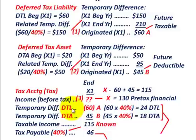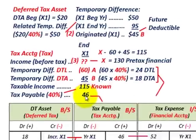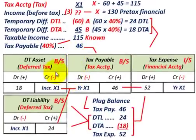In this case we only had two temporary differences and no permanent differences. Tax payable is straightforward: 40% × $115,000 taxable income = $46,000 current taxes payable.